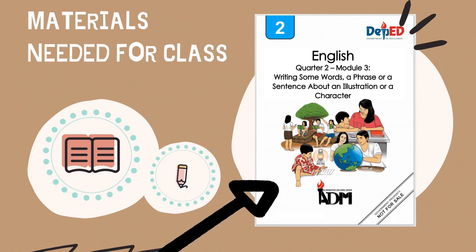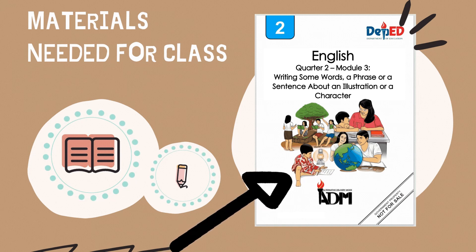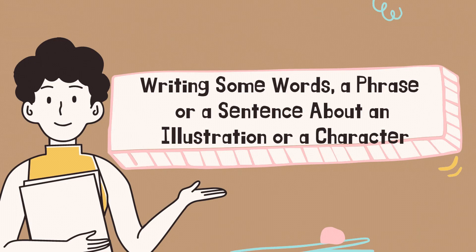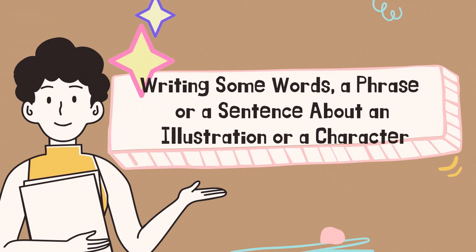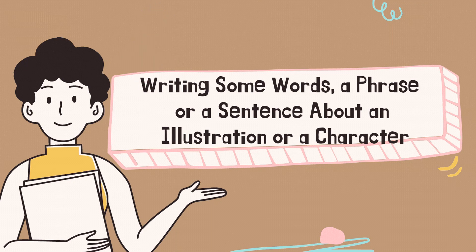Okay, now I can see that you are all ready. This time, let's start. Our lesson for today is about writing some words, a phrase or a sentence about an illustration or a character. Did you know that there are many ways to describe a character or an illustration — that we can do it through spoken or written form? I know that you are a smart kid, that's why I believe that you can confidently describe the traits of a character using specific and precise words based on the illustration that are shown or given to you.